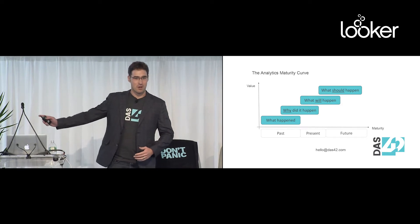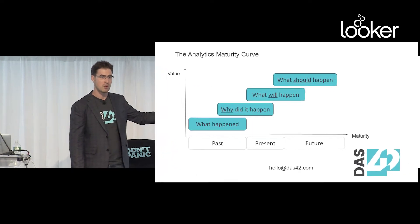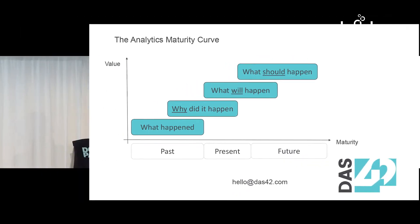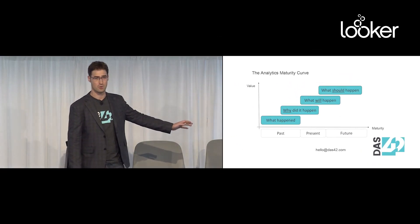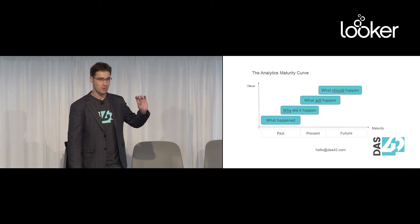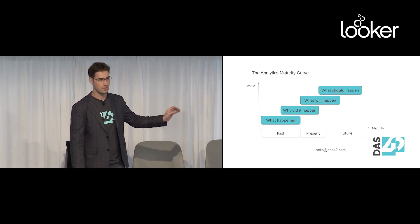On the bottom it says maturity and on the y-axis it says value. I was actually wondering if I should put ROI in here, but there are so many different companies present that ROI is a bit debatable depending on where you are on this maturity curve. The really important thing I want you to keep in mind is: just because you start at the bottom of the analytics maturity curve doesn't mean that the value is low. The value of getting started is incredibly high. The return on investment on getting to the first level is really, really high.